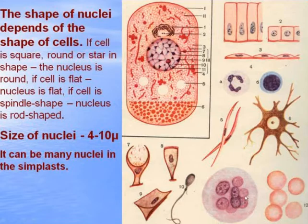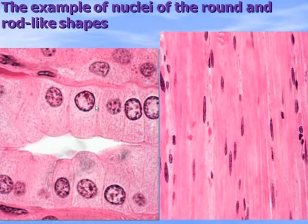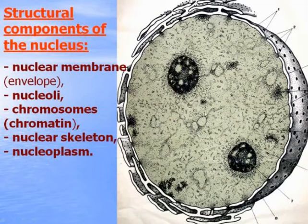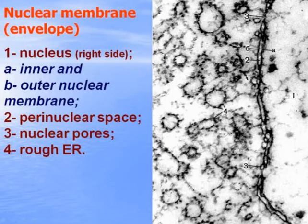There can be many nuclei in symplasts. This is an example of nuclei of round spherical shape and rod-like shape in smooth muscle cells. The structural components of the nucleus are: nuclear membrane or nuclear envelope, nucleoli, chromosomes or chromatin, nucleus skeleton, and nucleoplasm. In transmission electron microscopy, the right side shows a part of the nucleus and the left side shows the cytoplasm.